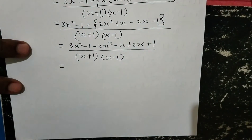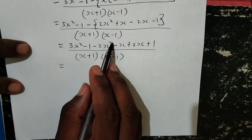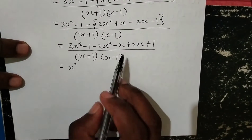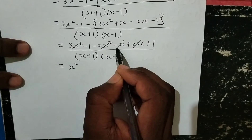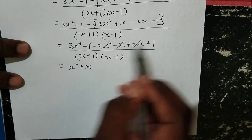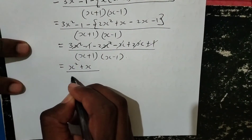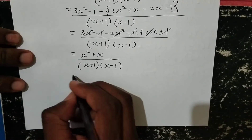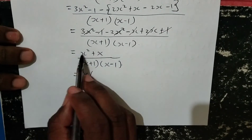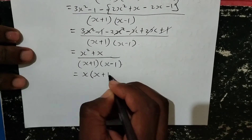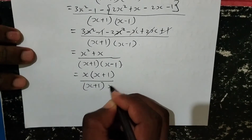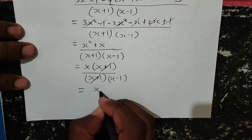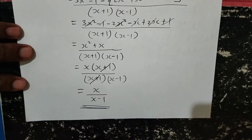Opening the bracket with the negative sign: 3x squared minus 1 minus 2x squared minus x plus 2x plus 1, divided by (x plus 1)(x minus 1). Collecting like terms: 3x squared minus 2x squared gives x squared; negative x plus 2x gives positive x; negative 1 plus 1 gives 0. The numerator is x squared plus x, which factors as x(x plus 1). Then x plus 1 cancels with x plus 1 in the denominator. The final answer is x over (x minus 1).